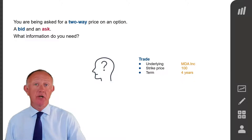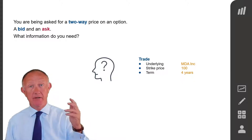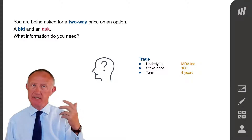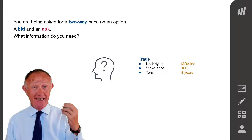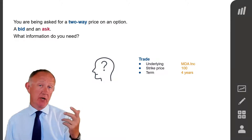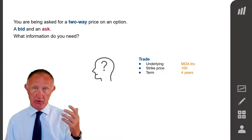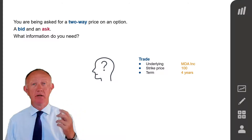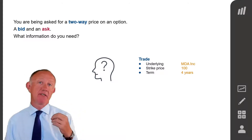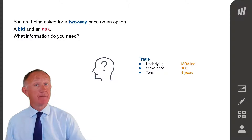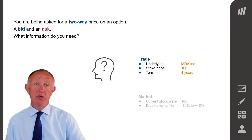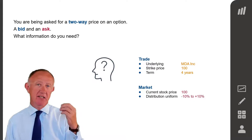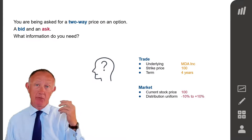Firstly, you're going to need some information about the option itself. What is the underlying asset? In this case, it's an equity called MDA Inc. What is the strike price? In this case, it's 100. We have the right to buy — it's a call option for 100. And what is the term? It's four years. We also need some information from the market. MDA Inc. is currently trading at a price of 100.